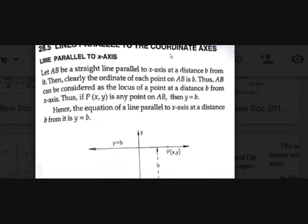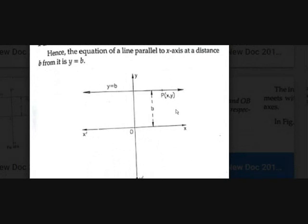Now, lines parallel to the coordinate axis — what will be the equations of lines if they are parallel to the coordinate axis? If we see this picture, here there is a straight line at a distance b from the x-axis. The y-coordinate is always b, while the x-coordinate varies from 0 to infinity. At any place, y will be b, so the equation will be y = b. Similarly, if you take a line parallel to the y-axis, the equation will be x = b.